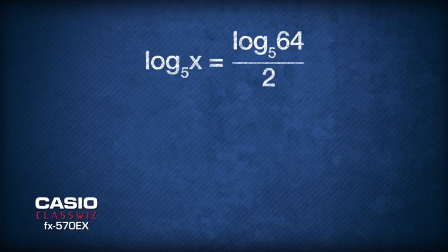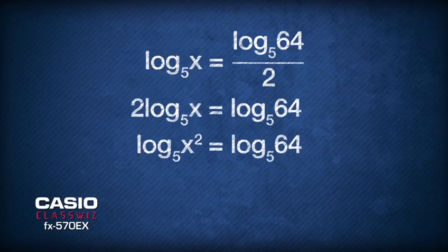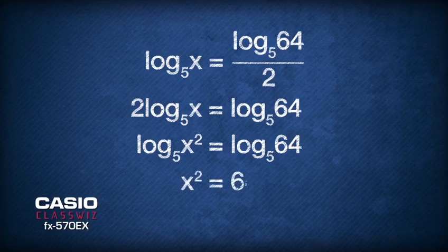Using the same formula that we used earlier to simplify logarithm base 5 of 25, we now write 2 logarithm base 5 of x as logarithm base 5 of x squared. And thus, comparing both sides of the equation gives us x squared equals 64 and we can solve that x equals 8.